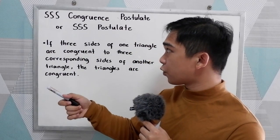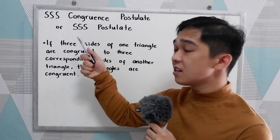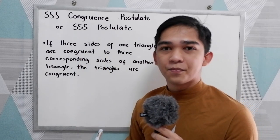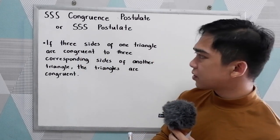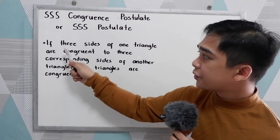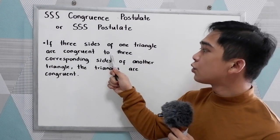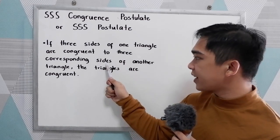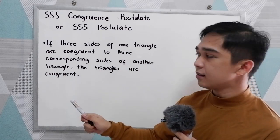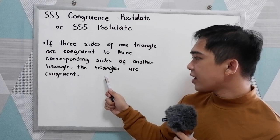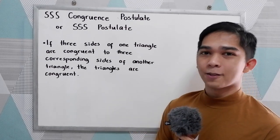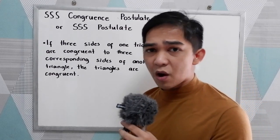SSS stands for side, side, side in a triangle. So the postulate states that if three sides of one triangle are congruent to the three corresponding sides of another triangle, the triangles are congruent.